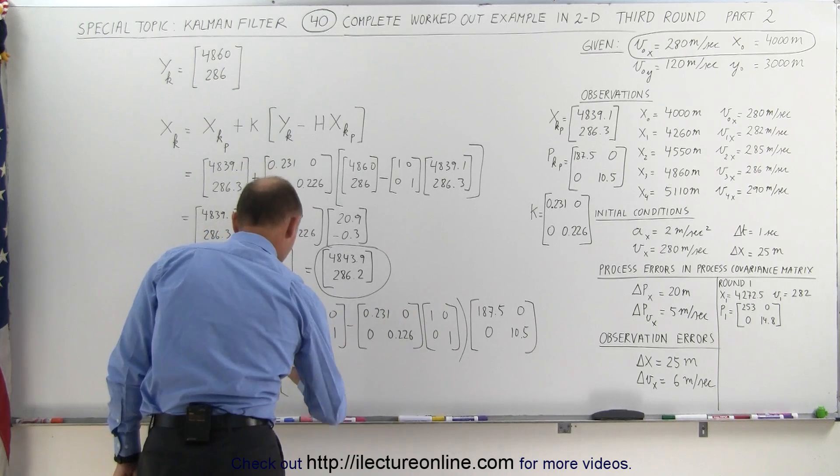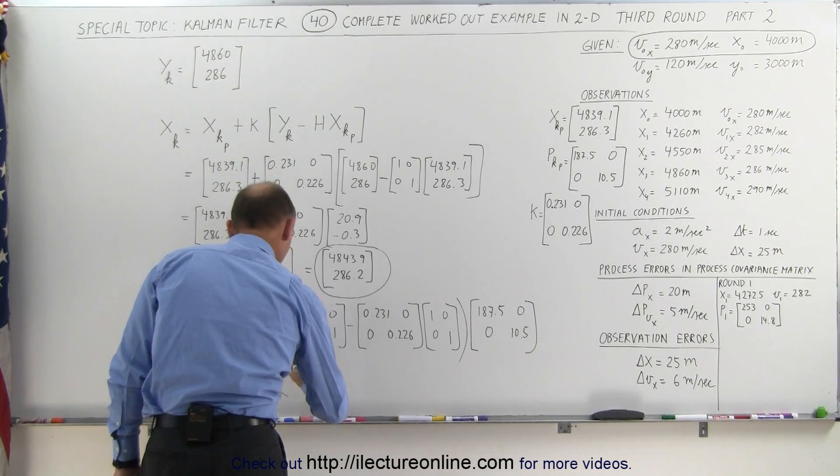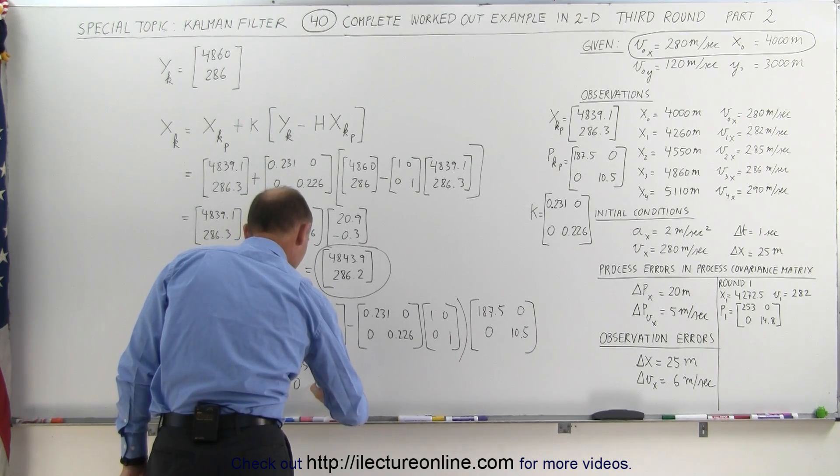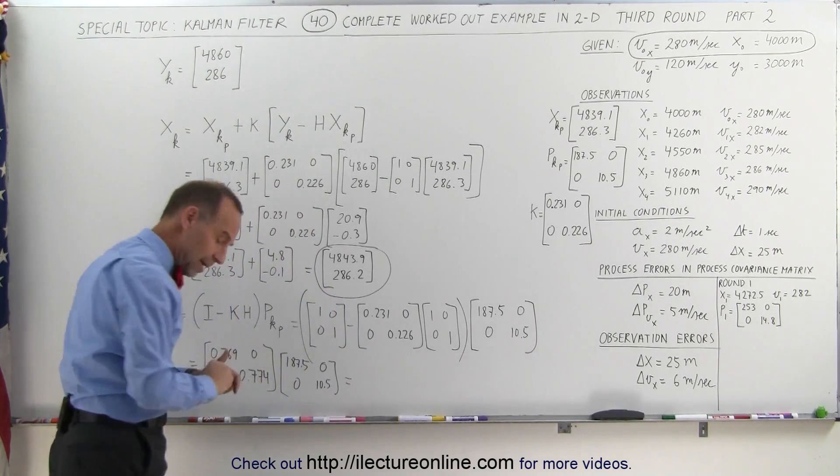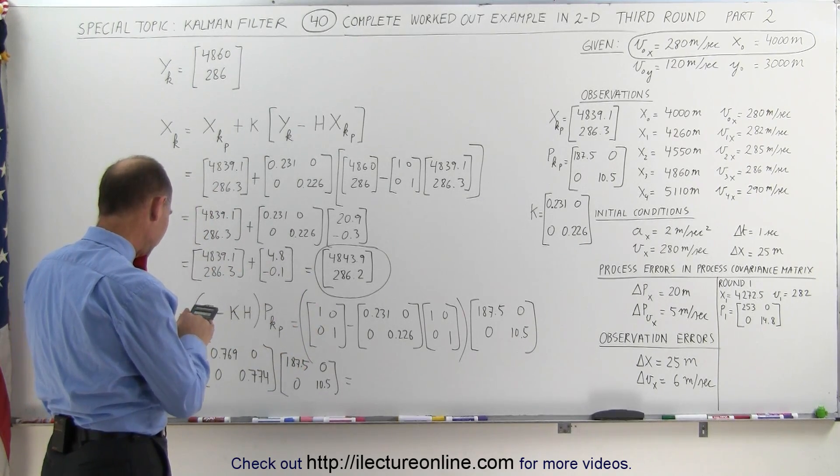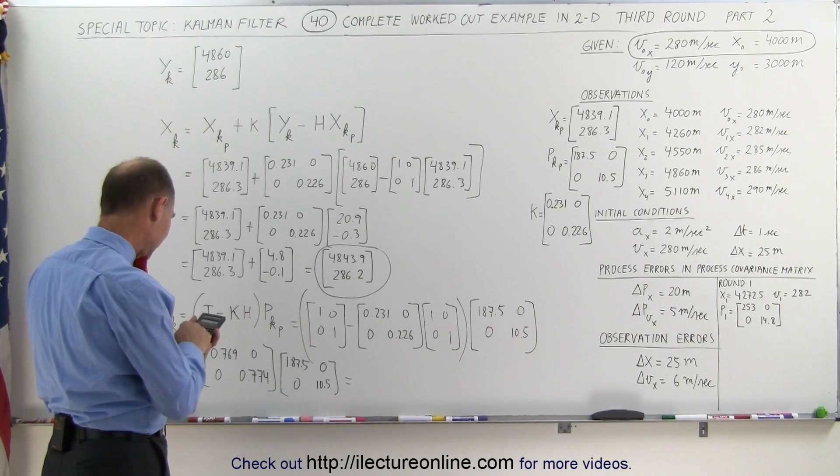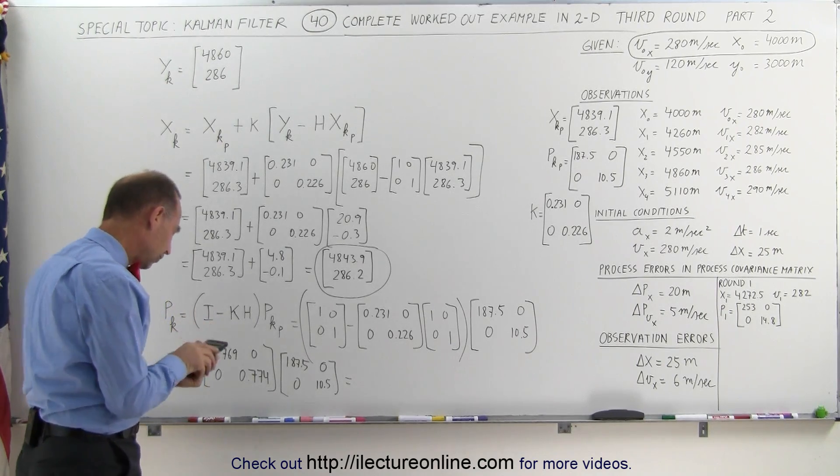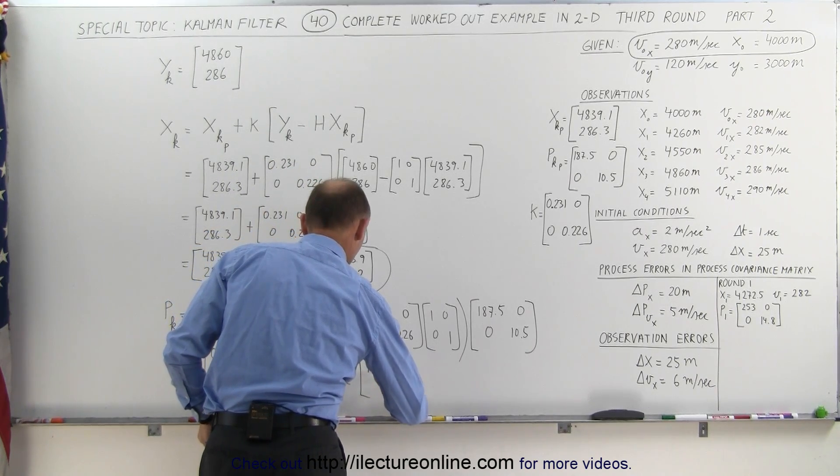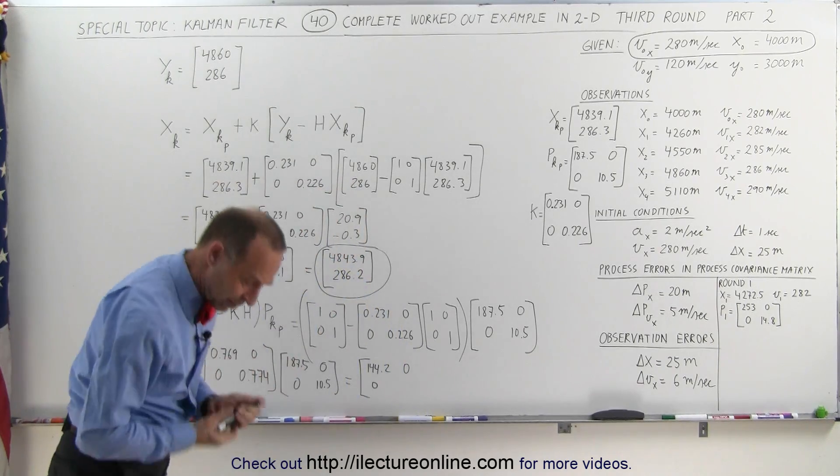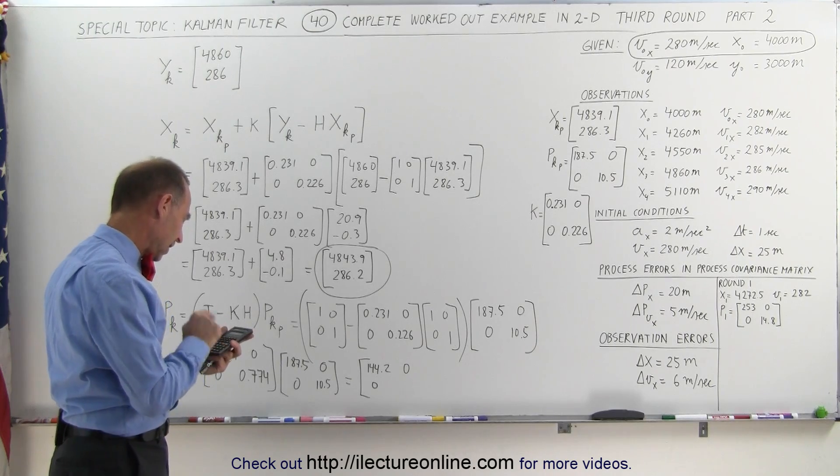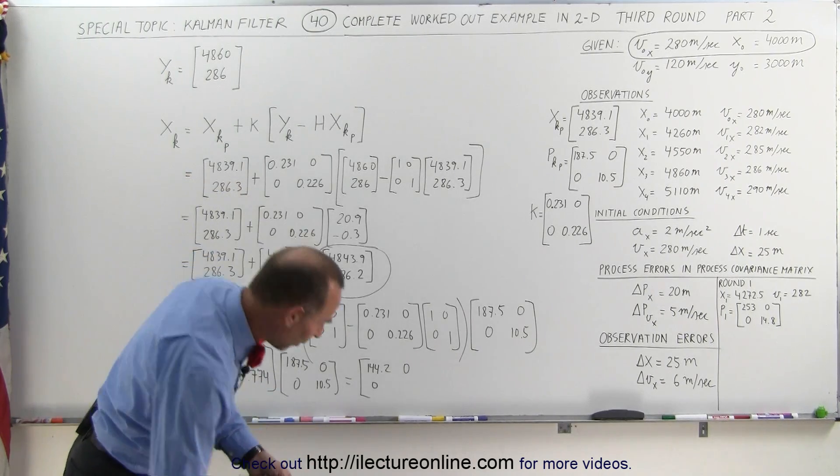I multiply that times 187.5, 0, 0, and 10.5. Let's see what that ends up being. That's 0.769 times 187.5, which gives us 144.2. And 0.774 times 10.5 gives us 8.1.